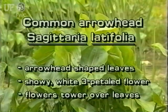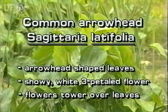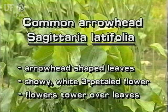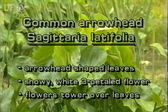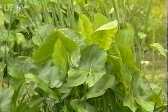Common arrowhead is a moderate-sized aquatic plant with arrowhead-shaped leaves. It has showy, white, three-petaled flowers which often tower over the leaves.